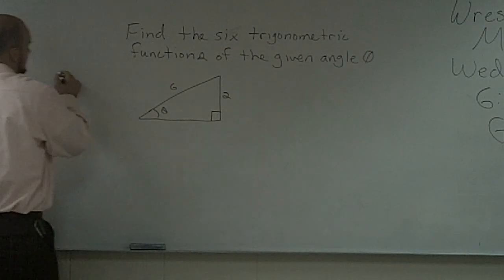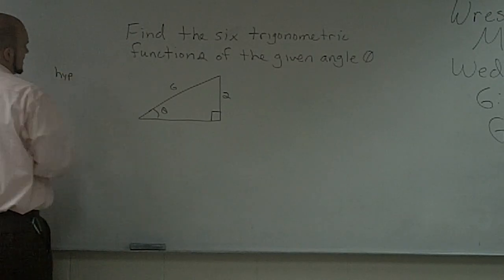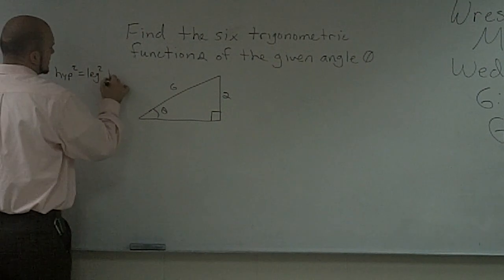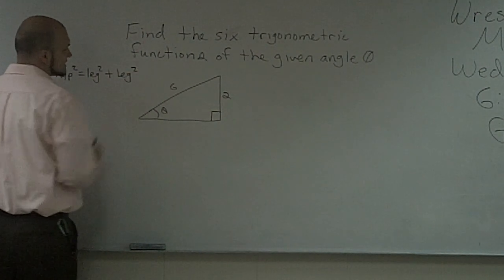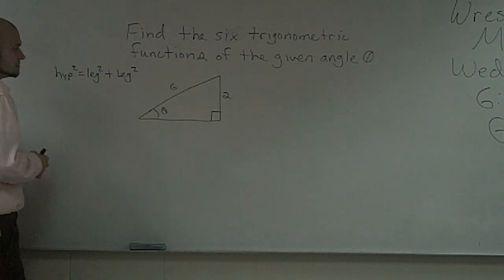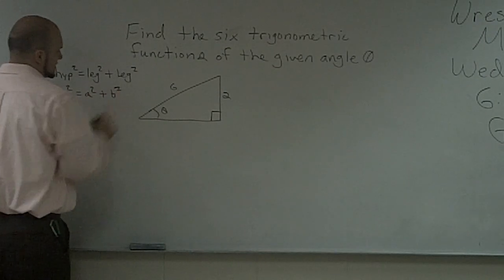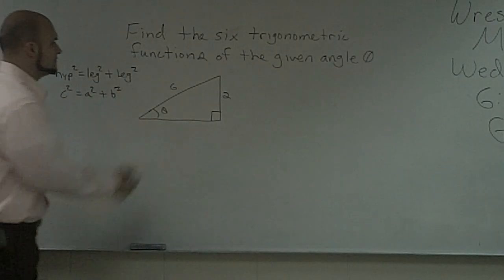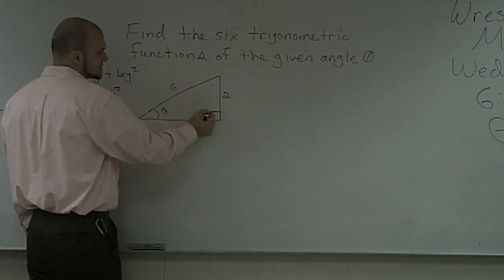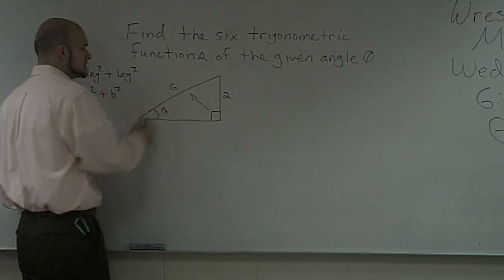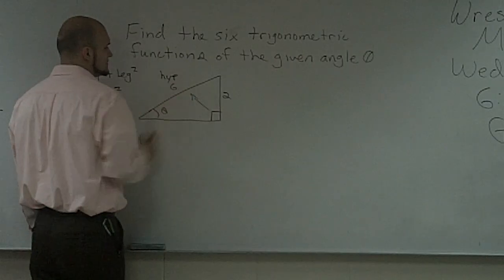So if we remember our Pythagorean theorem, we know that the hypotenuse squared is equal to the leg squared plus the leg squared. Also, we call it c squared equals a squared plus b squared. So if we know that our longest side, it's also the side that's directly across from our 90-degree angle, is always going to be our hypotenuse.